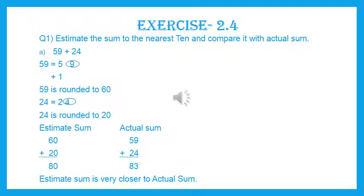In exercise 2.4, we have to estimate the sum to the nearest 10, 100, or 1000. You must remember the round off that we have done — round off to the nearest 10, round off to the nearest 100, round off to the nearest 1000. Before starting these questions, let me recall the round off that we have done.